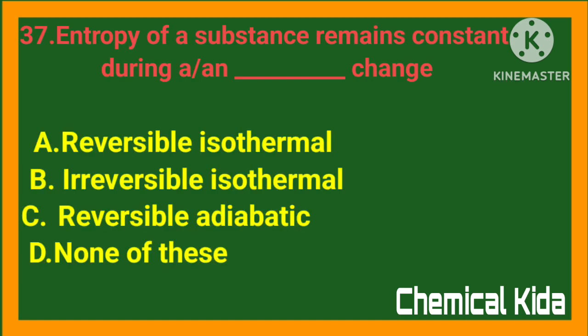Entropy of a substance remains constant during a change that is: a) reversible isothermal, b) irreversible isothermal, c) reversible adiabatic, d) none of these. Answer: c) reversible adiabatic.